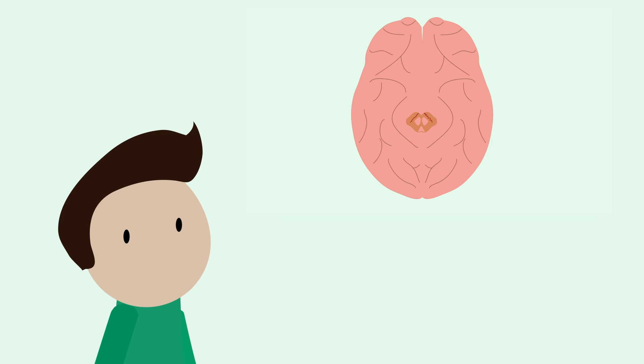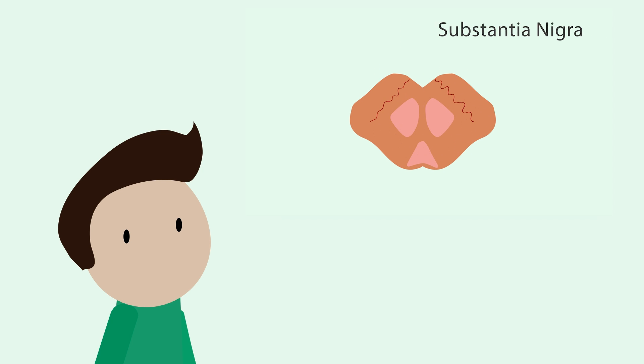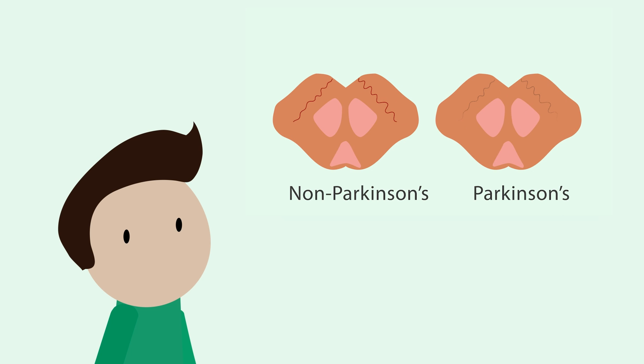Within the brain, there is an area known as the substantia nigra. The majority of the dopamine-producing cells lost with Parkinson's disease are found here.